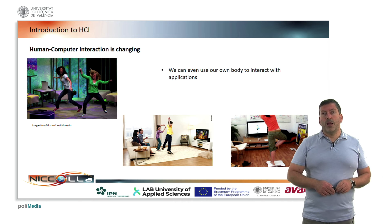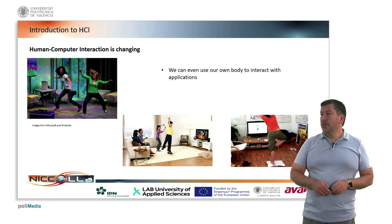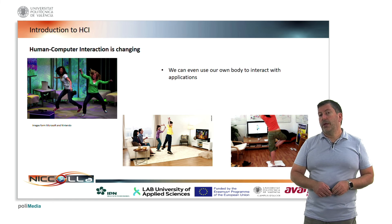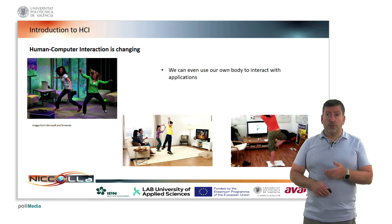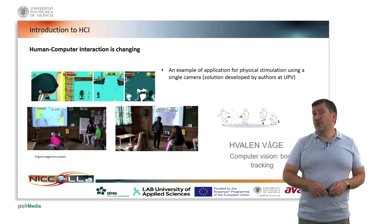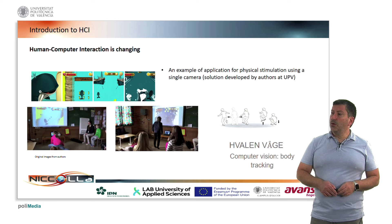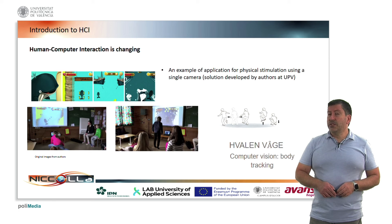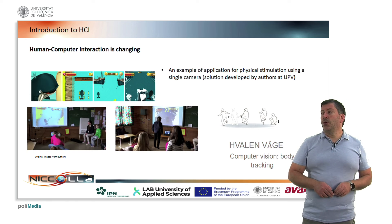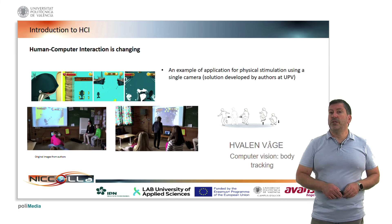We can also use our body. Devices such as the Microsoft Xbox Kinect can track our body so that everything we do can be detected in real time, allowing us to interact with any kind of application using our own body. Nintendo was also able to offer similar solutions. In one example we developed, children were able to control a whale by just moving their body — jumping, moving left, right, or crouching — everything controlled using just a single camera.